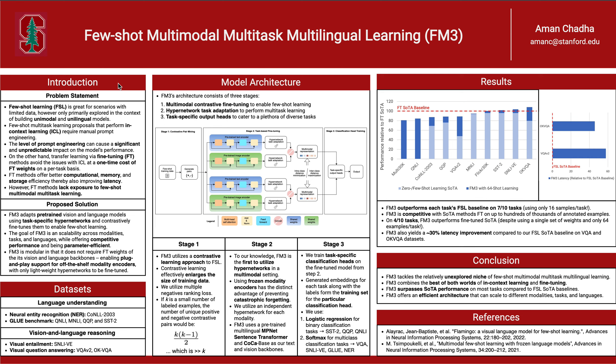On the other hand, transfer learning via fine-tuning methods avoids these issues with in-context learning at a one-time cost of fine-tuning weights on a per-task basis. Fine-tuning methods offer better computational, memory, and storage efficiency, which results in much better latency than in-context learning-based methods.